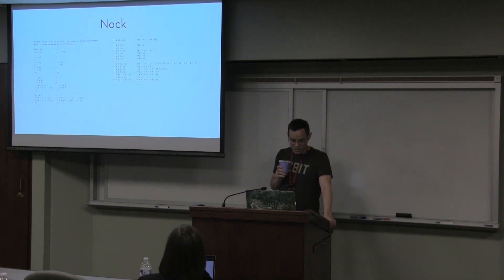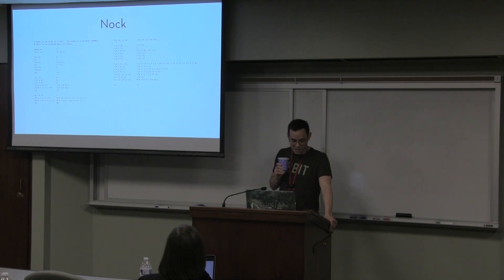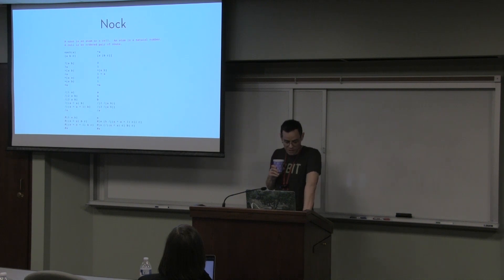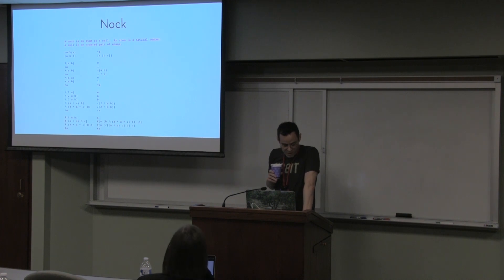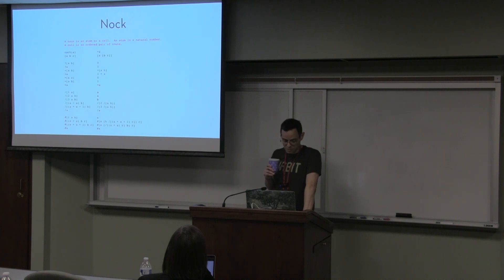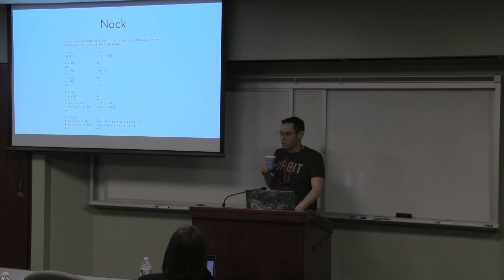In Urbit, the simplest basis for a computing system is Nock — a functional assembly language small enough to fit on a t-shirt. The data model: a noun is an atom or a cell. An atom is any natural number; a cell is an ordered pair of nouns. Basically a noun is a binary tree whose leaves are numbers — specifically unsigned integers of arbitrary length. Somebody called them S-expressions without the S, because Nock has no interest in what the atom is.